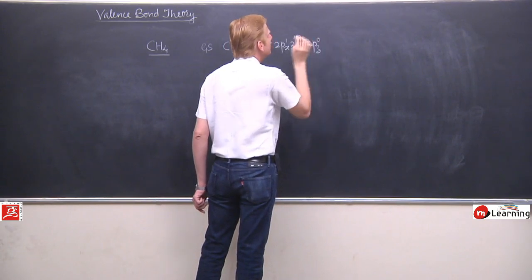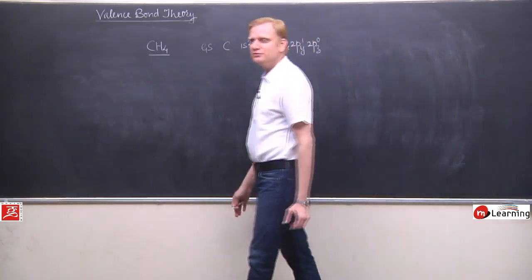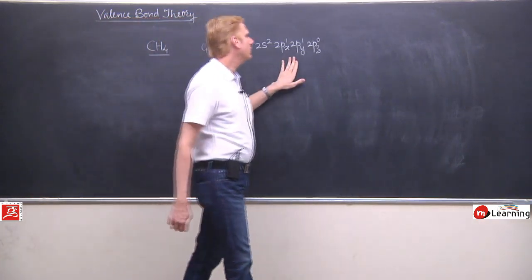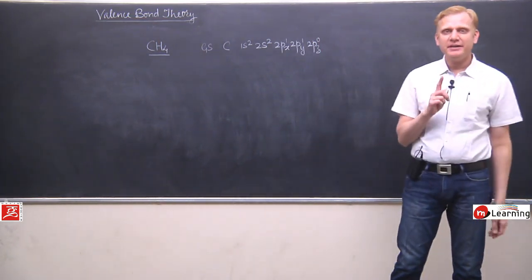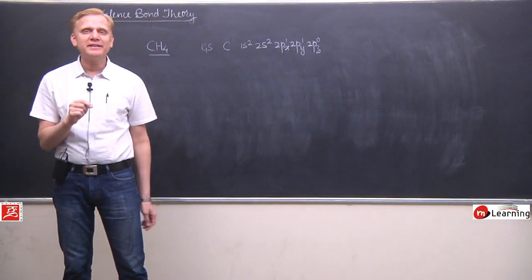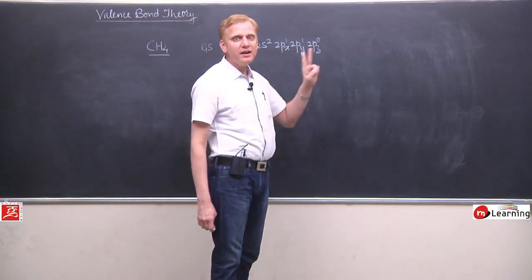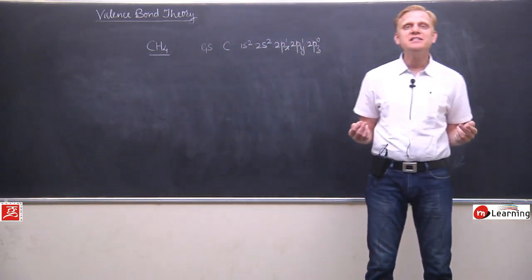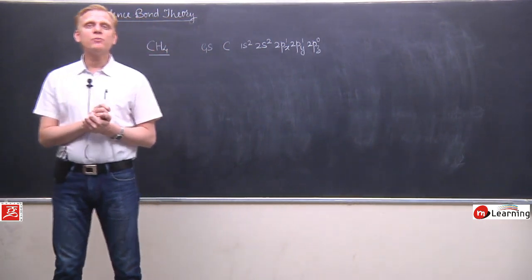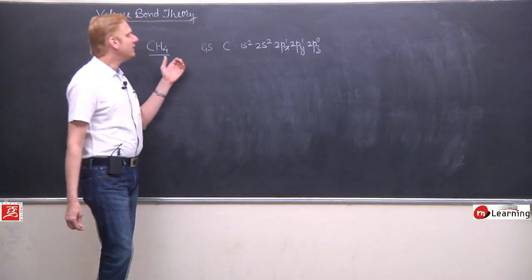Look at the ground state of carbon — atomic number 6, configuration 1s2, 2s2, 2px1, 2py1, and 2pz0. Can you find the number of orbitals having unpaired electrons here? Yes, there are two. But you know that carbon's valency is 4 and carbon is a well-known tetravalent element. So how will four bond formation be done? Four unpaired electrons are not available here.